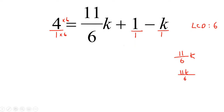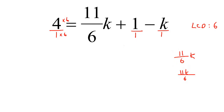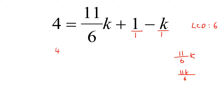It looks like the same thing, and it is, but it's a little different — here the 11 over 6 was in front, now it's 11K over 6. Many learners prefer this form, and I do too. So we can rewrite it as: 4 equals 11K over 6 plus 1 minus K.